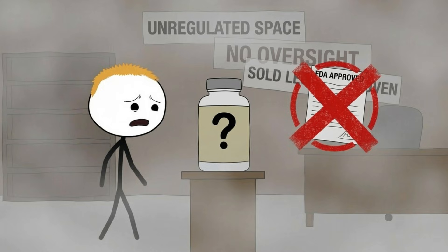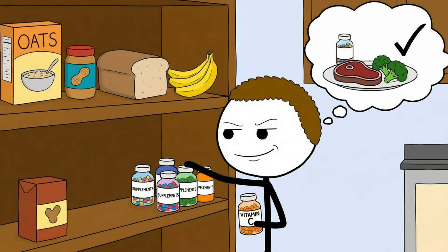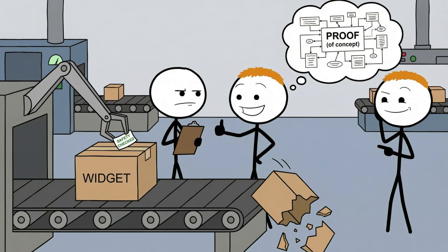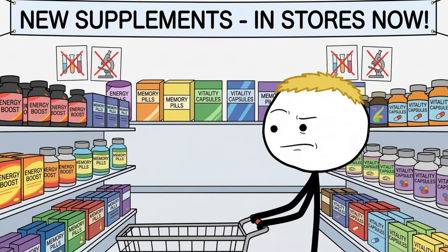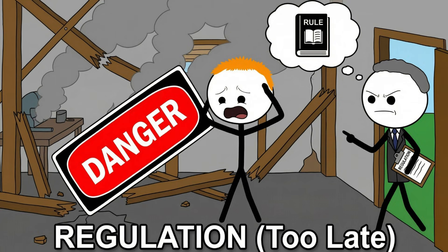In reality, dietary supplements occupy a strange legal gray zone in many countries, including the U.S. Supplements are regulated as foods, not drugs. That means manufacturers are responsible for safety, but they do not need to prove effectiveness before selling. Products can reach shelves without large clinical trials. Oversight often happens after problems appear, not before.